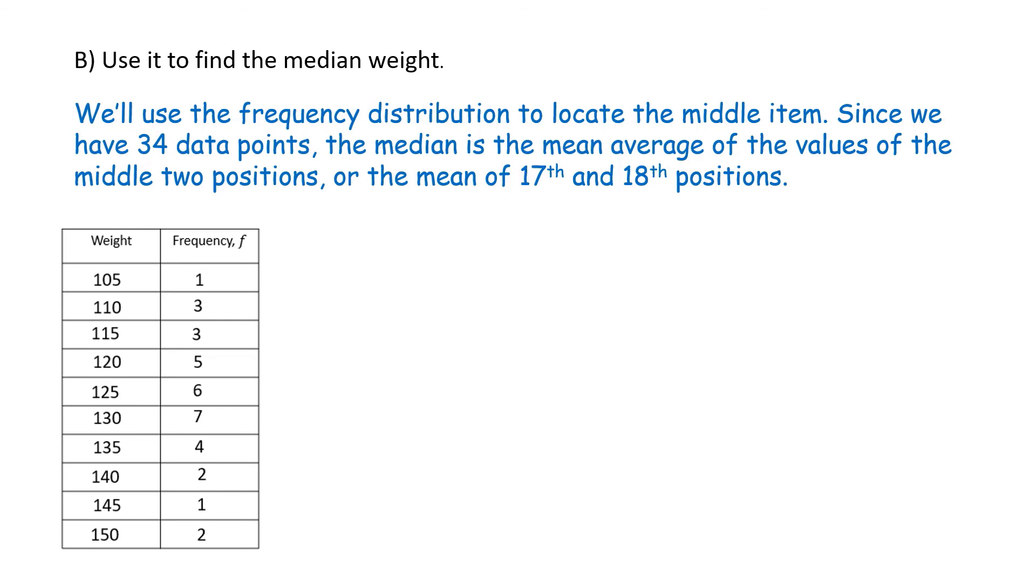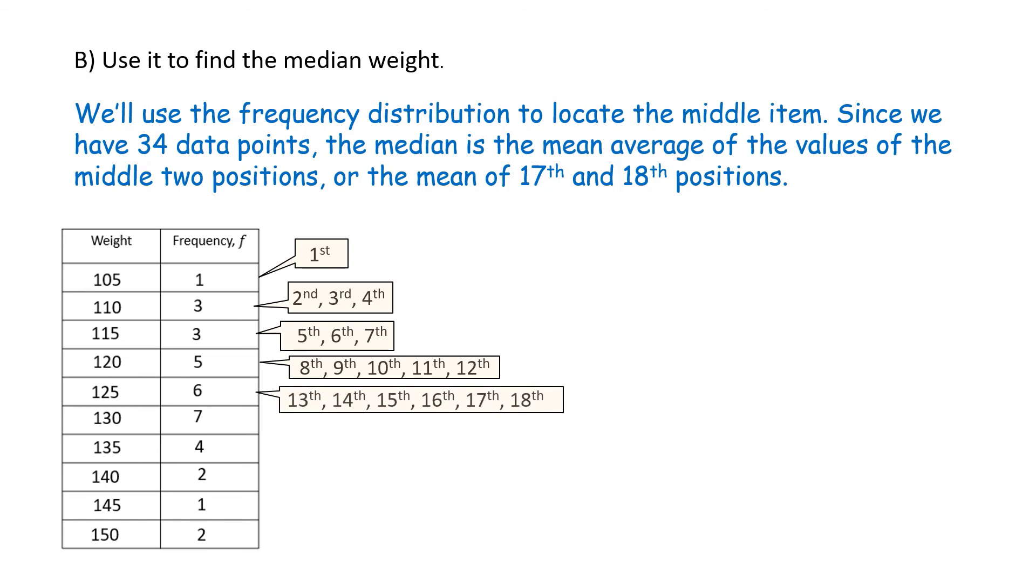105 is the first position, and 110, that's 2nd, 3rd, and 4th positions. Remember, these are ranked. Then for 115, that would be 5th, 6th, and 7th positions. 120, there's 5 of them, so we're going to have 8th, 9th, 10th, 11th, and 12th positions. At 125, we've got 6 more rankings, starting at 13th. So we'll have 13th, 14th, 15th, 16th, 17th, and 18th.